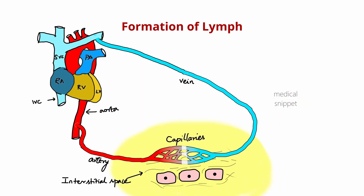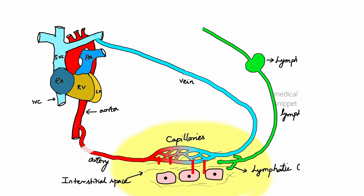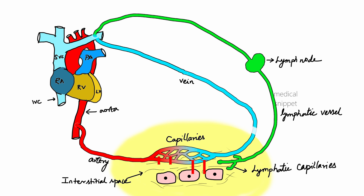Now we will discuss how lymph is formed. The fluid that is filtered by the arterial end of the capillaries supplies nutrients to tissues and collects the metabolic waste from the tissues. Most of the fluid is reabsorbed back into the venous end of the blood capillaries. This excess fluid that is left behind, when it enters the lymphatic capillaries, is called lymph.